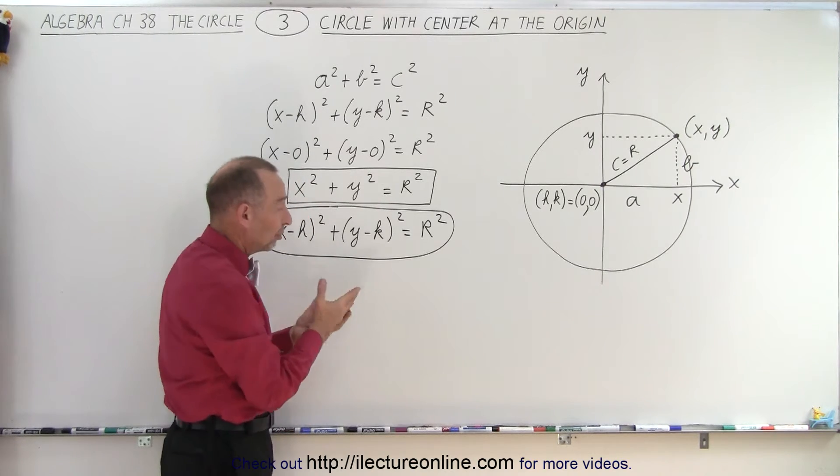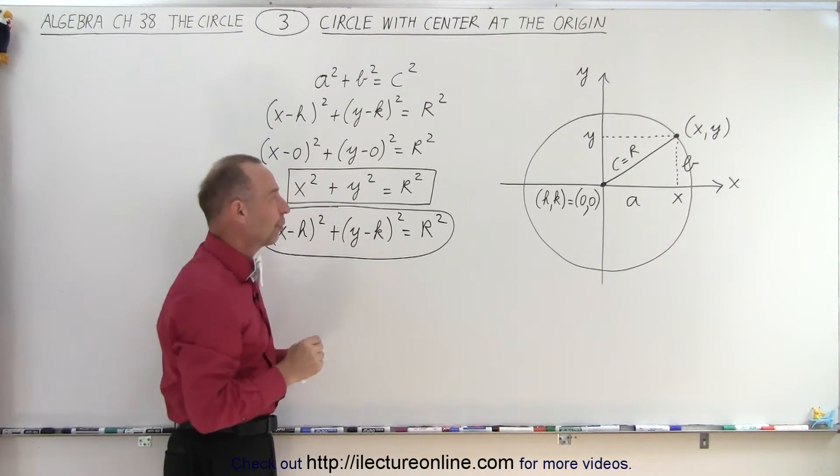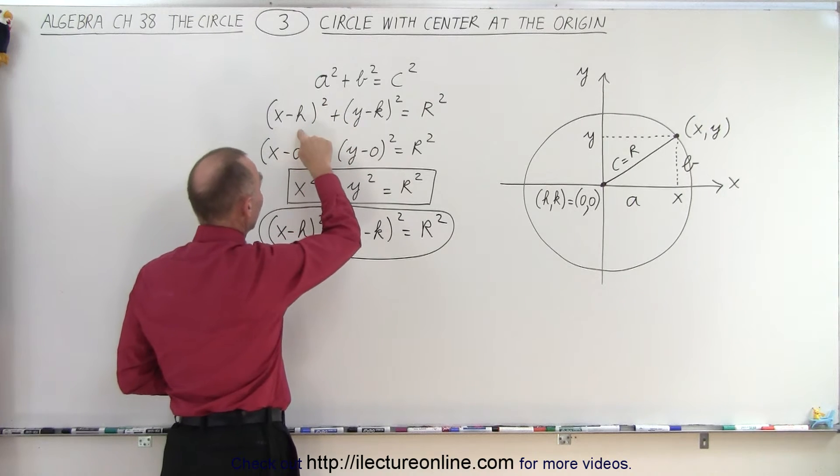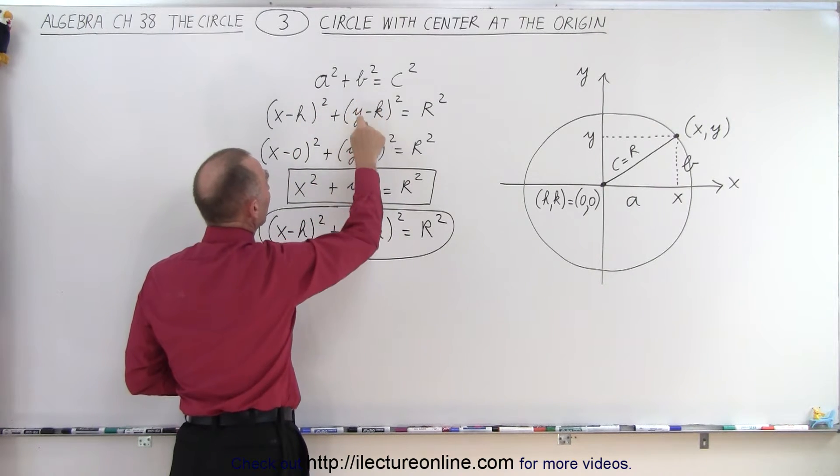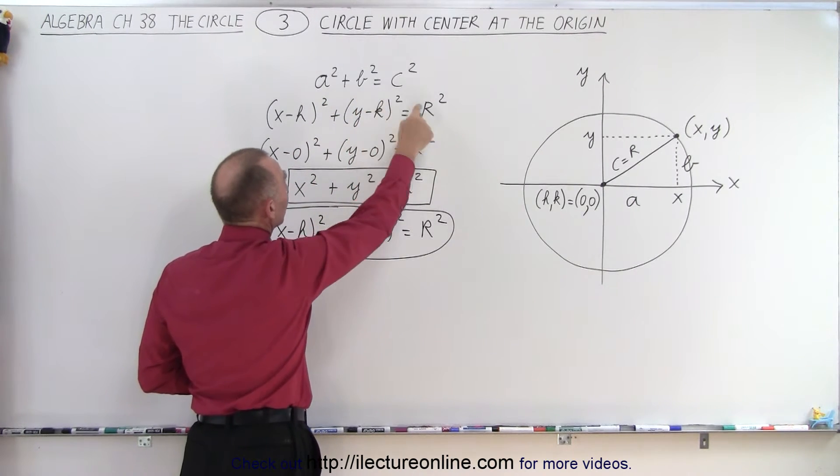Now that's also the basis of the equation for the distance formula. a will be x minus h just like before, b will be y minus k, and c is the radius of the circle.